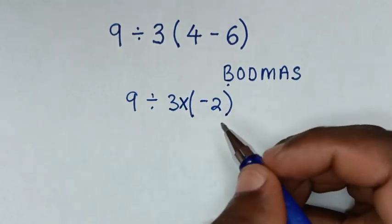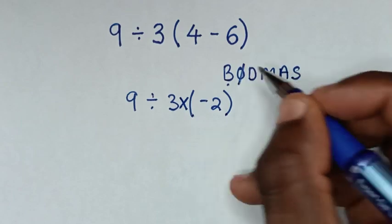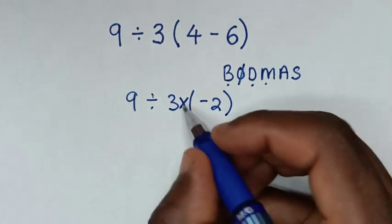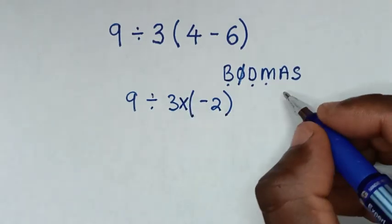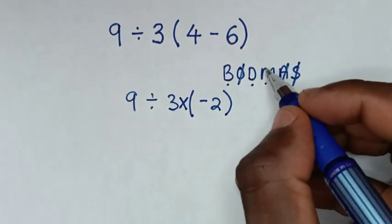Now from the BODMAS rule, we don't have orders or exponents. We have division and multiplication, but we don't have addition or subtraction. So we'll deal with this group only.